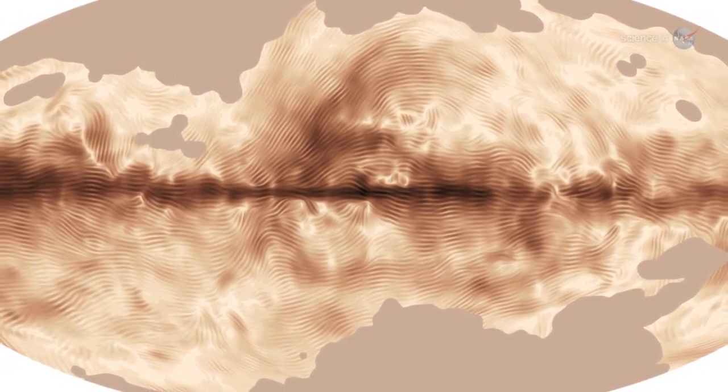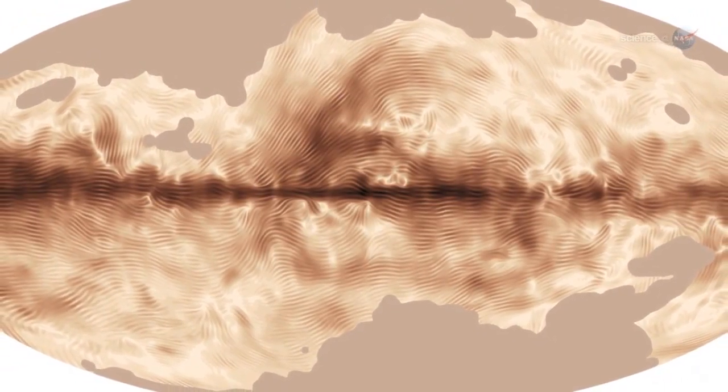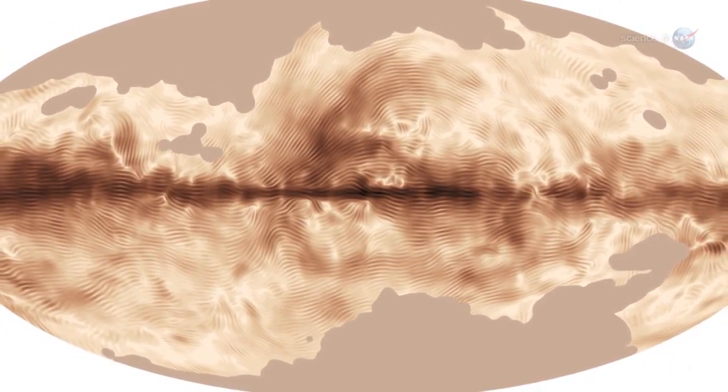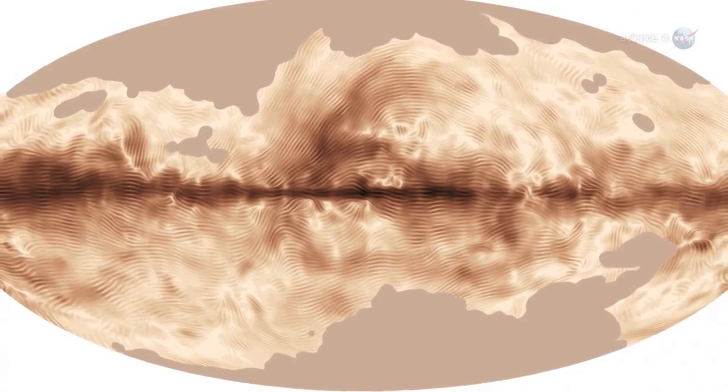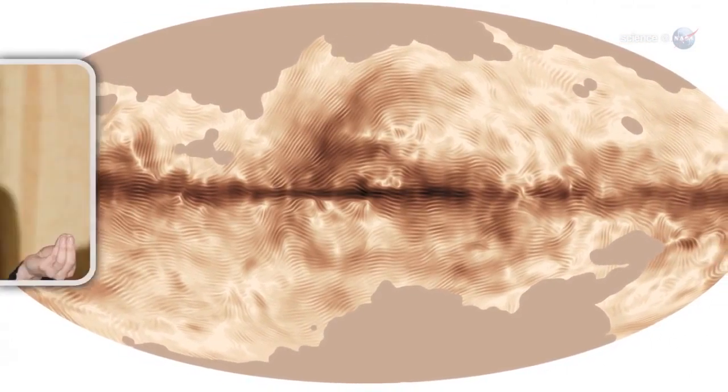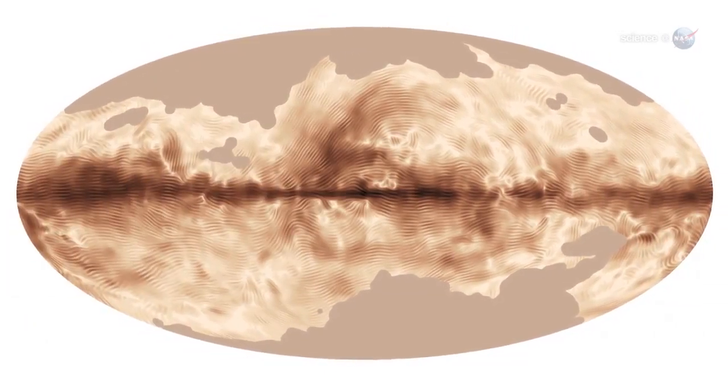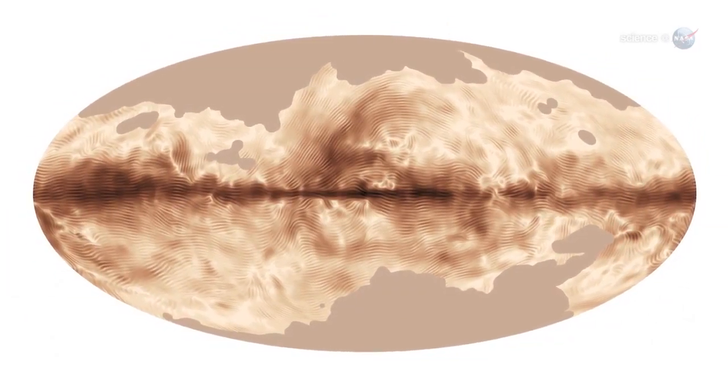The Planck map, which resembles a giant fingerprint, is proof of a galactic dynamo at work. This dynamo operates in the interstellar medium that pervades our galaxy, says Katia Ferriere, a member of the Planck science team at the Institut de Recherche en Astrophysique et Planetologie in Toulouse, France.